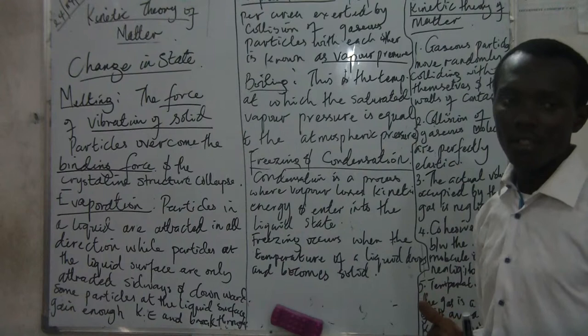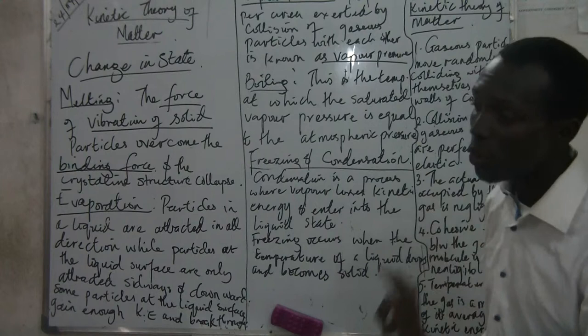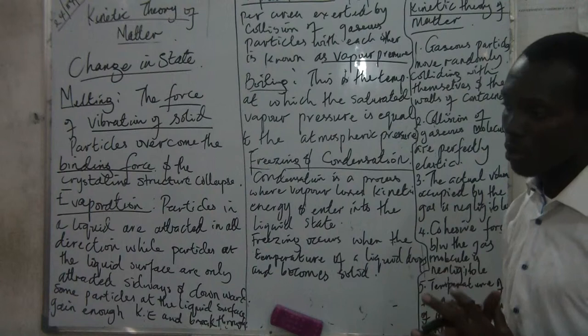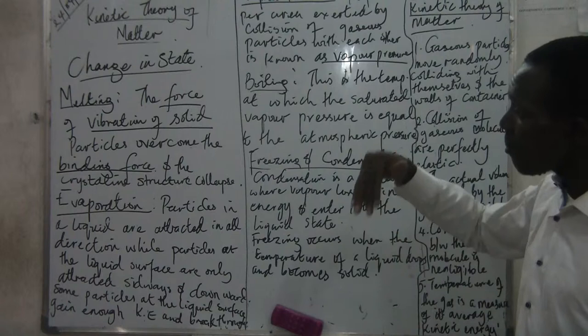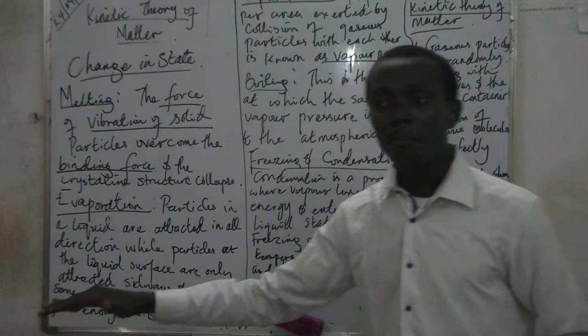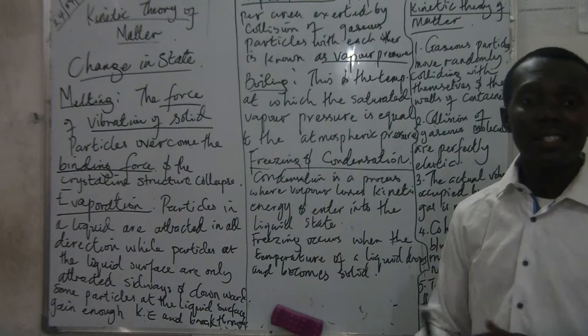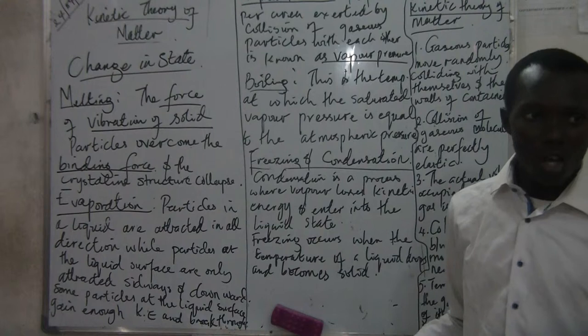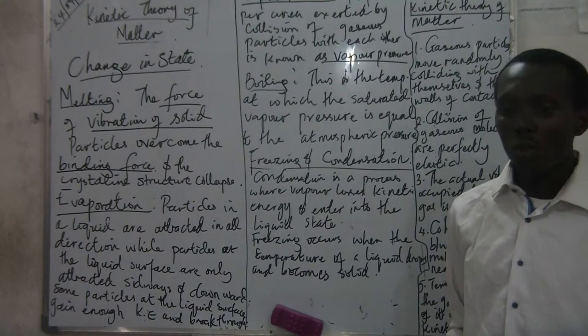Latent heat of vaporization is the extra energy that is gained. When a thermometer is placed inside a liquid and the liquid comes to the boiling point — which is 100 degrees Celsius — and you keep supplying more heat, you find out that the thermometer reading does not increase beyond 100 degrees. Rather, it remains at that amount. The word latent means hidden, so the gain in kinetic energy becomes unnoticed by the thermometer.